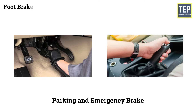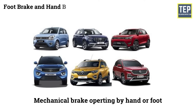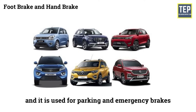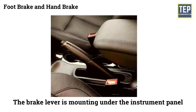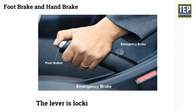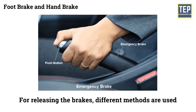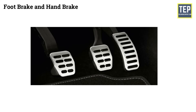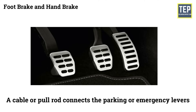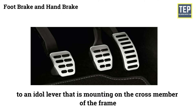Foot brake and hand brake, also known as parking and emergency brake. In most passenger cars, the mechanical brake is operated by hand or foot and is used for parking and emergency braking. These brakes either act on the rear wheels or are attached to the transmission or on the propeller shaft. The brake lever is mounted under the instrument panel to the left of the driver. When the brake is applied, the lever is locked in place by a ratchet. For releasing the brakes, different methods are used — some hand brakes are released by squeezing the lever and control finger together, and some are released by turning the lever and pushing it down. The foot pedal is released by special release levers. In rear wheel type parking brakes, a cable or pull rod connects the parking or emergency lever to an idler lever mounted on the cross member of the frame.